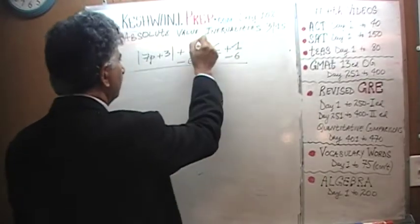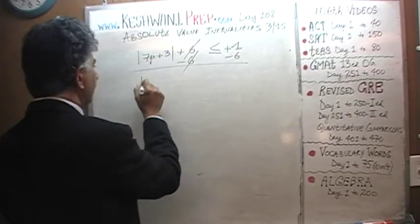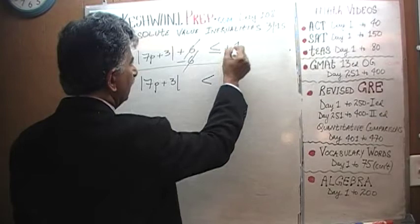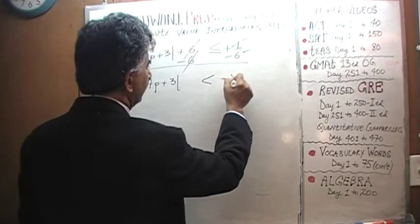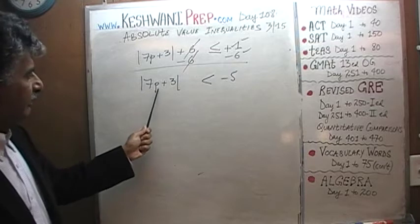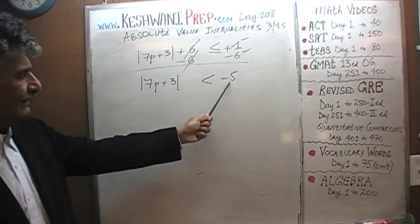Positive 6 and negative 6 will go away and we find that the absolute value of 7P plus 3 is less than or equal to negative 5. Absolute value of 7P plus 3 is less than negative 5.